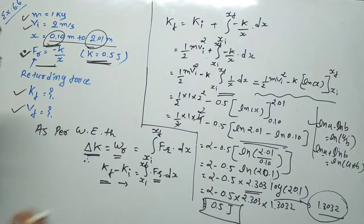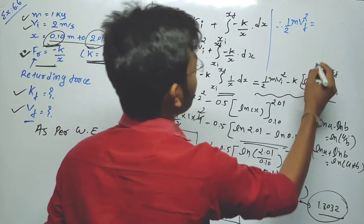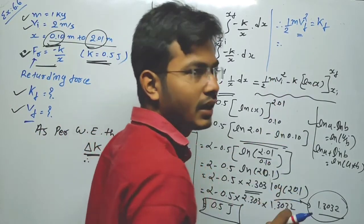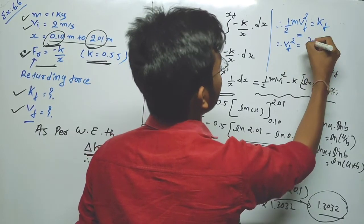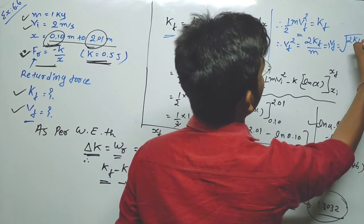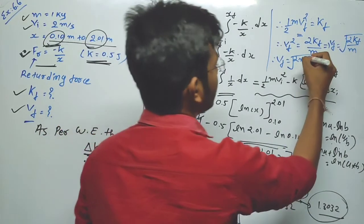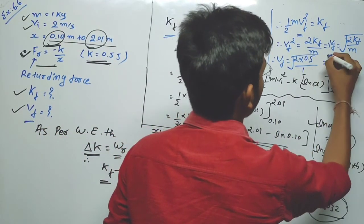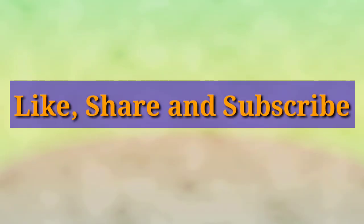We still need to find v_f. We know that (1/2)mv_f² = K_f, so v_f² = 2K_f/m. Therefore v_f = √(2K_f/m) = √(2 × 0.5 / 1) = √1 = 1 m/s. So the final speed of the block is 1 meter per second.